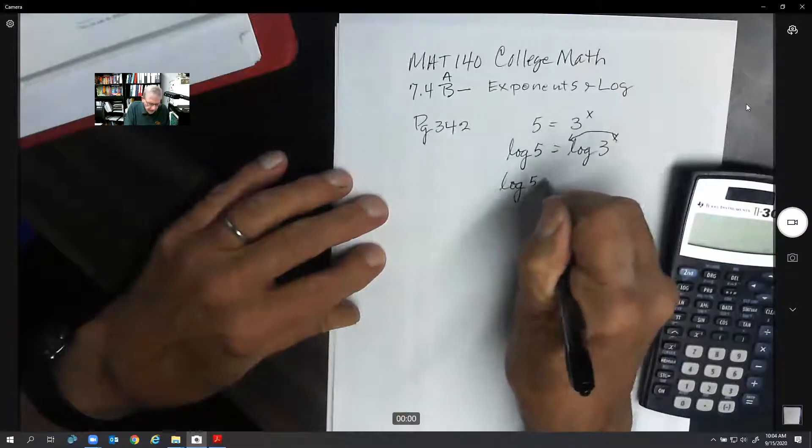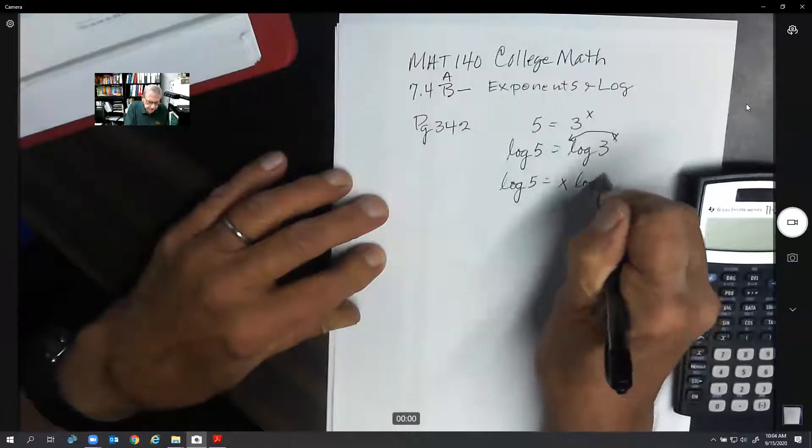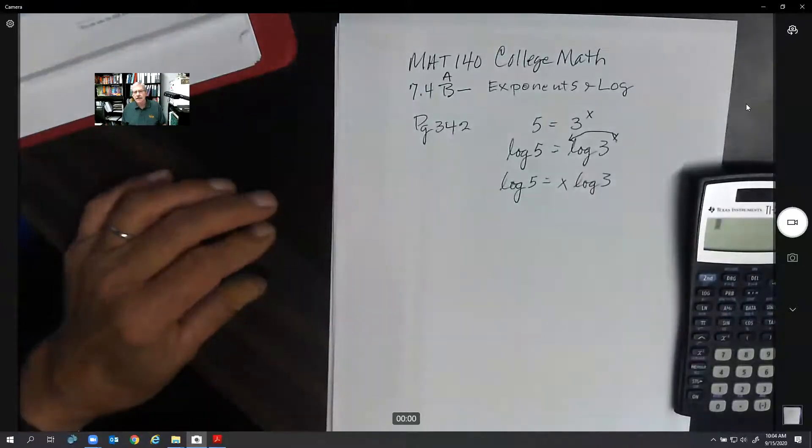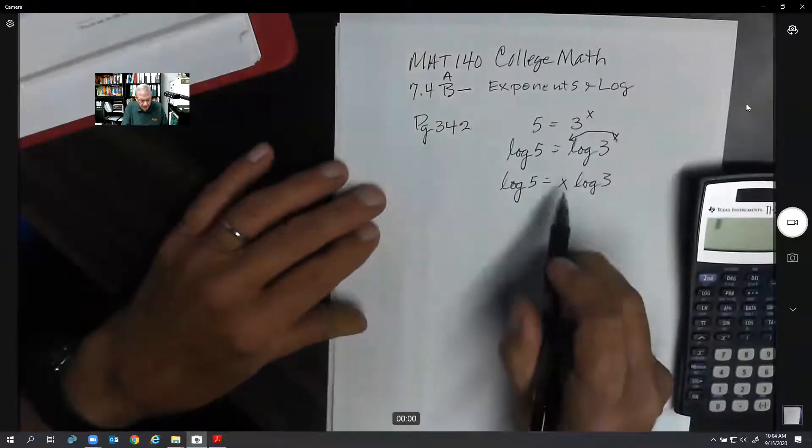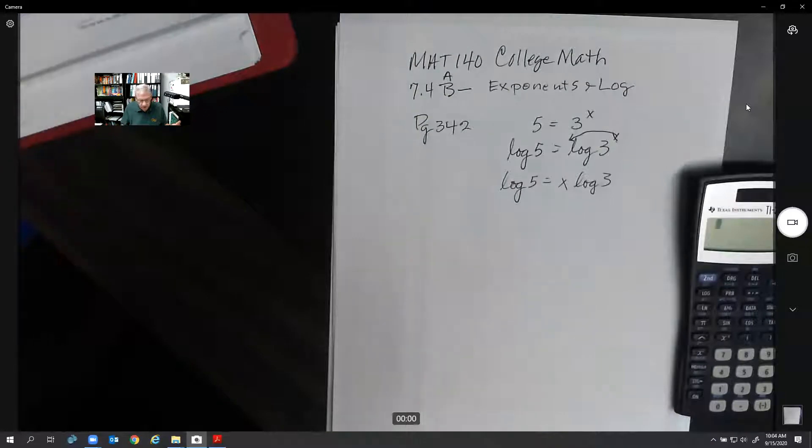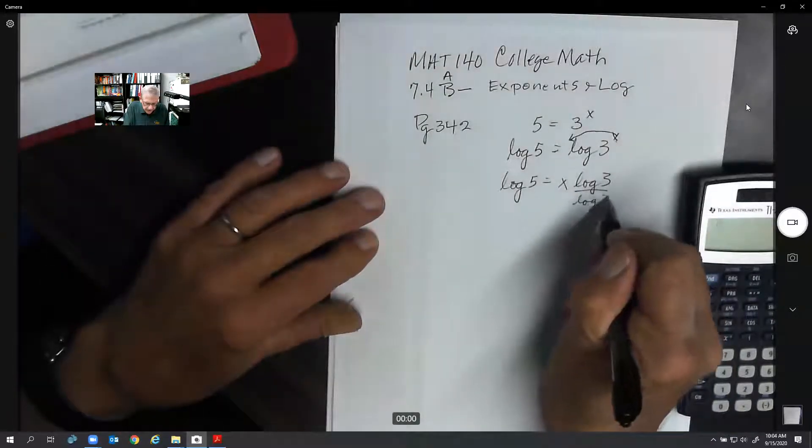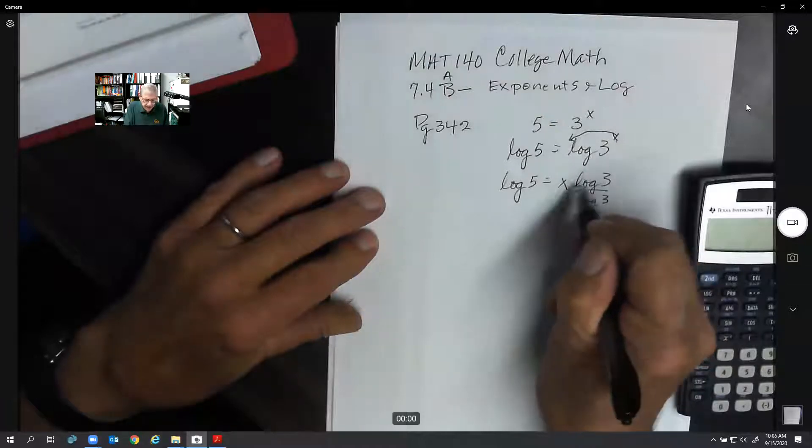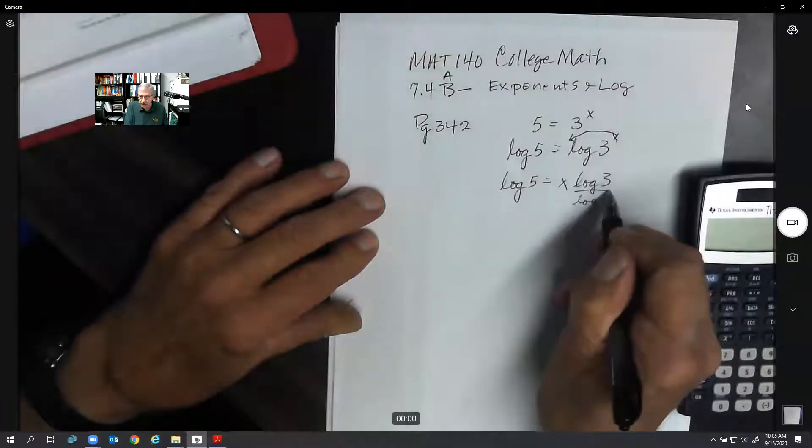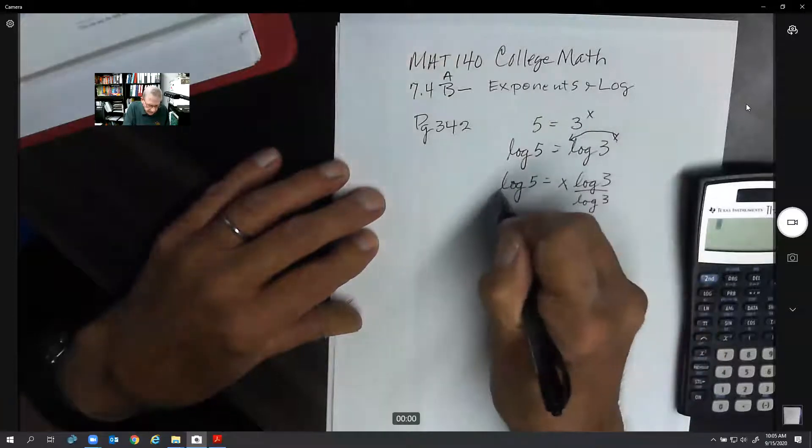So we have x times log 3. Then if I want to solve for x, I'm going to divide both sides by log 3 to get x by itself. Because this is a times problem, I'm going to do it with division.